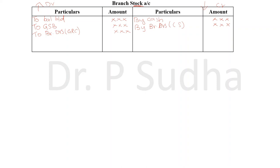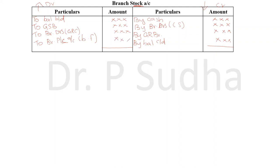If the branch is returning goods to the head office, the value of stock will come down because the branch is sending away goods. So, by goods returned by branch, recorded in the credit side. Finally, we record closing stock by balance carried down, then tally the account. The balancing figure is transferred to branch profit and loss account — if in the debit side it is profit; if in the credit side it is a loss.